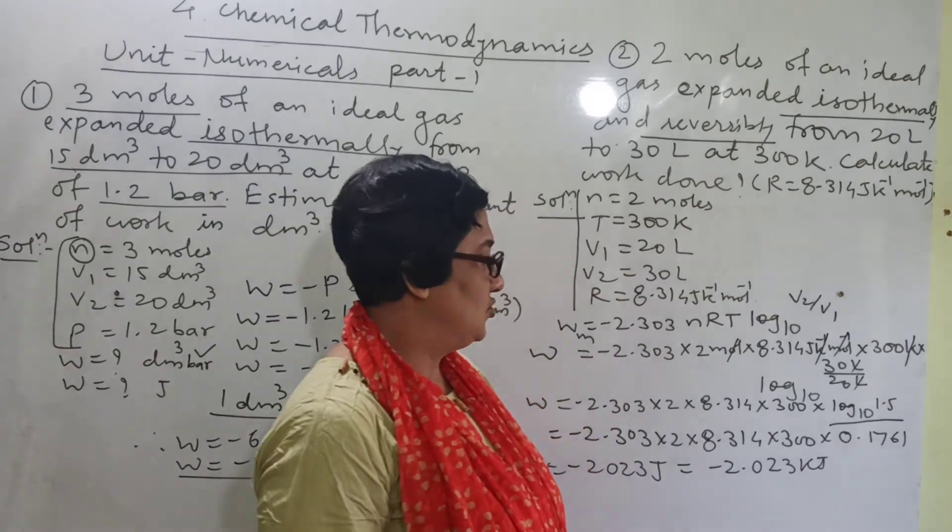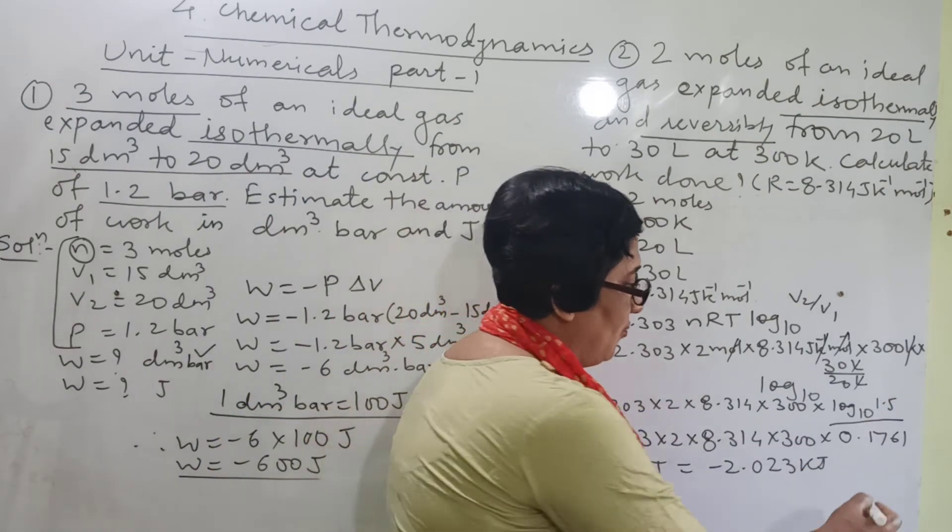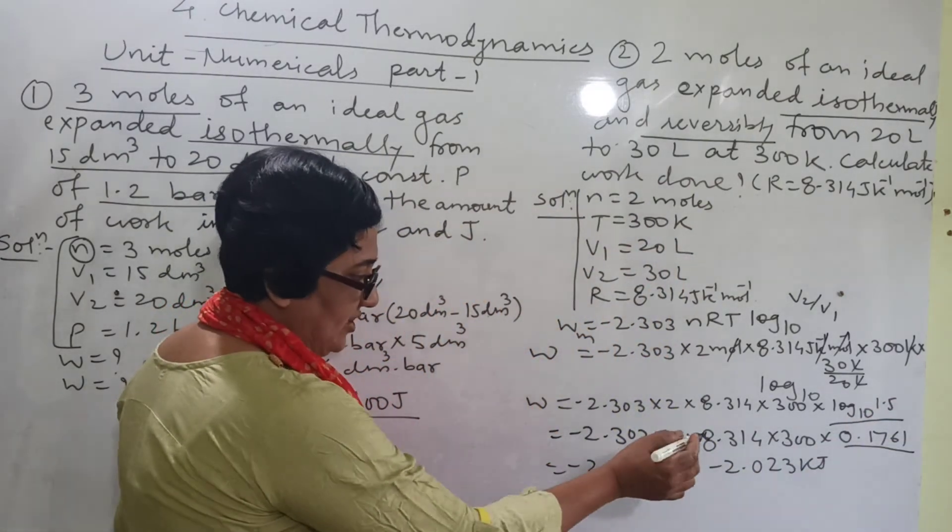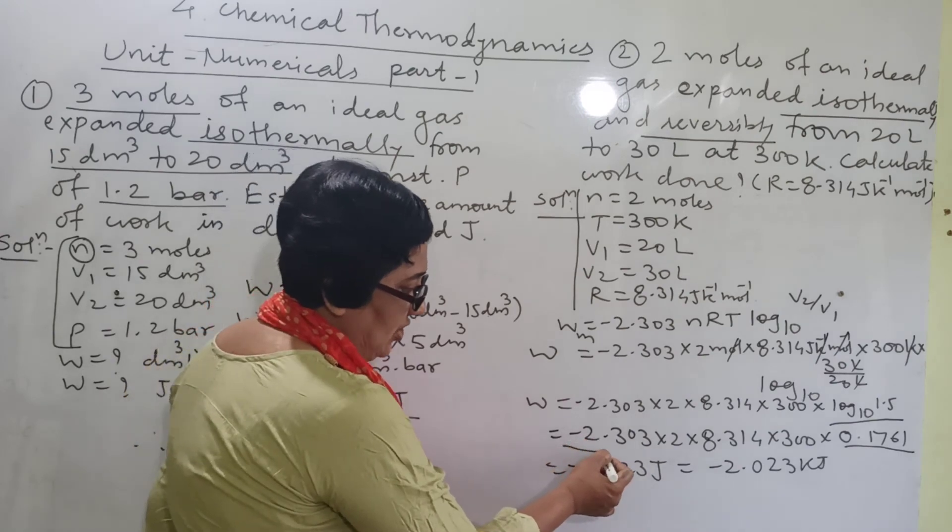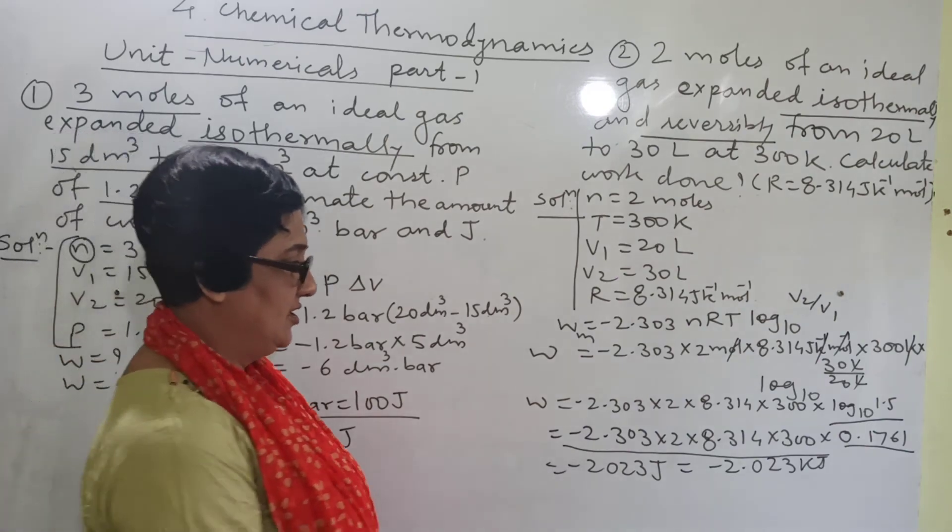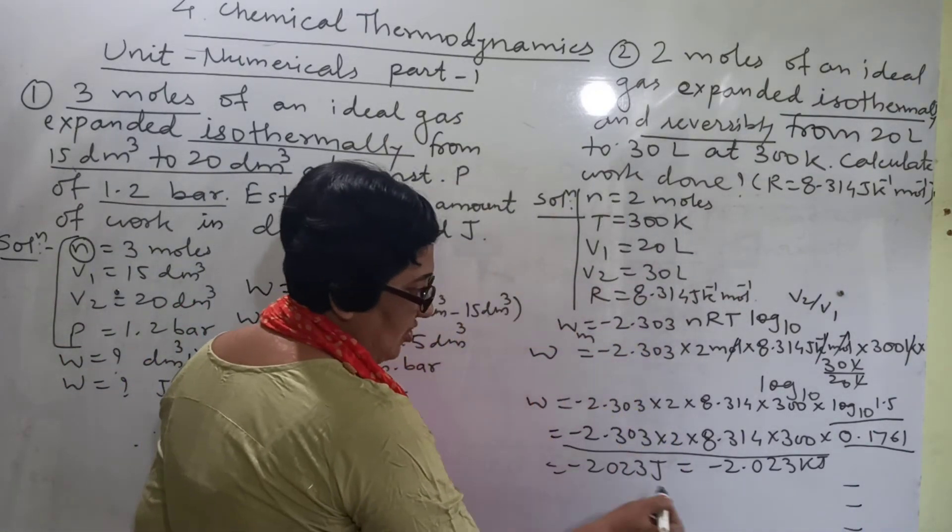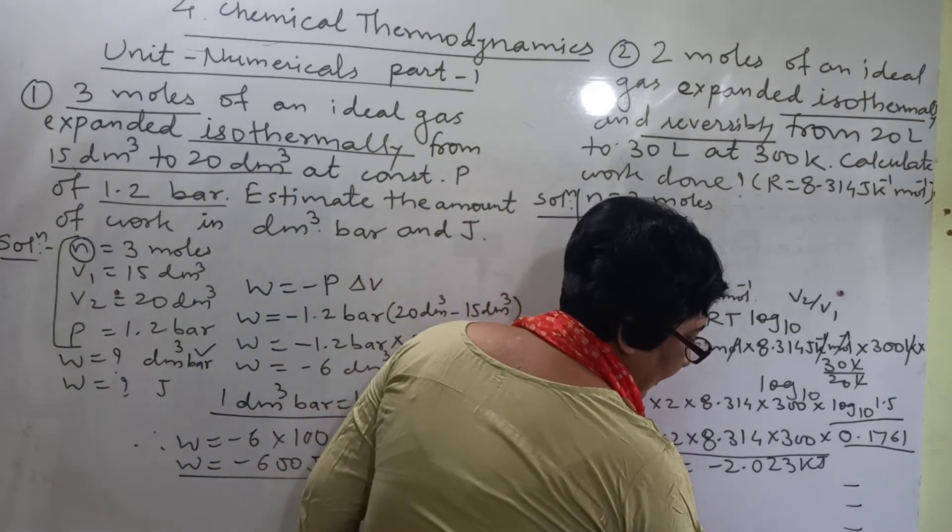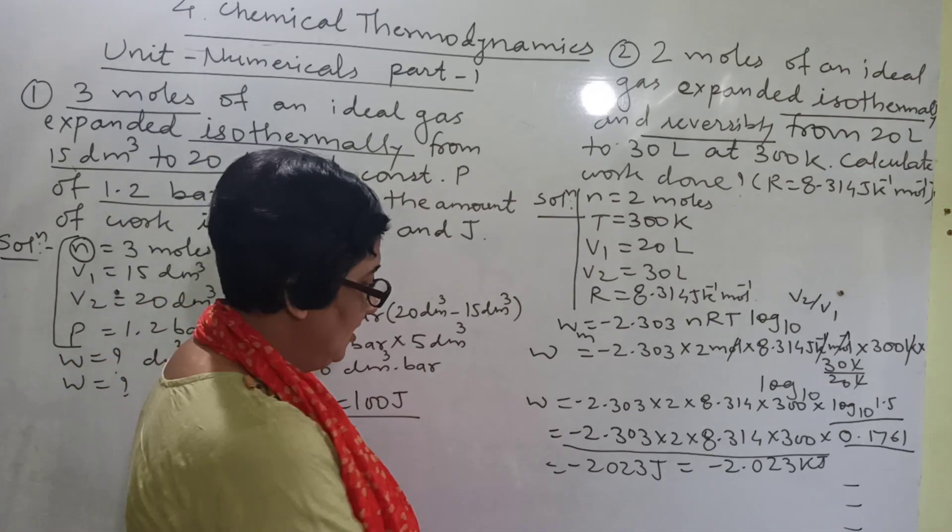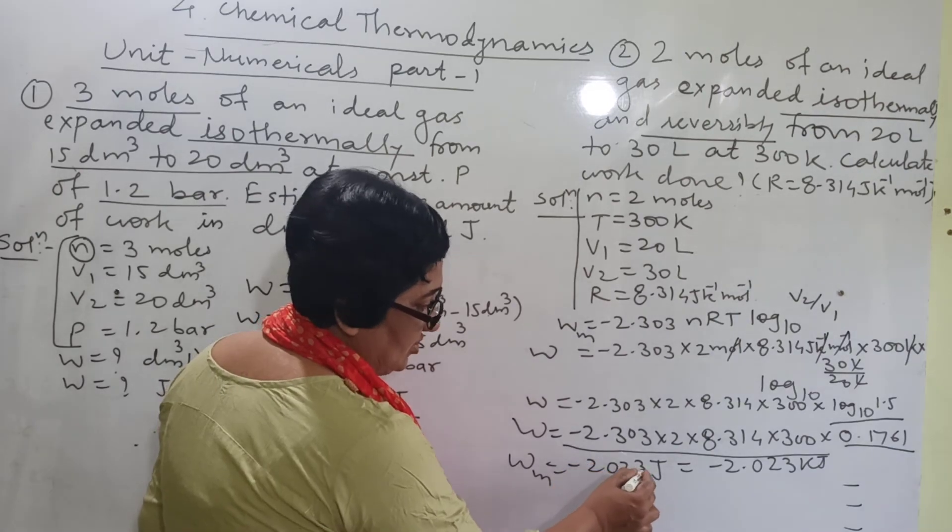Here log of only one figure. So log to the base 10, 1.5 comes out to be 0.1761. And now clear the calculation. Use log even for calculating these different figures. Write down all the log here. Addition of all these logs and then after addition, take the antilog of that figure. And it comes out to be W equal to, the maximum W equal to minus 2023 Joule, means minus 2.023 kilojoule.